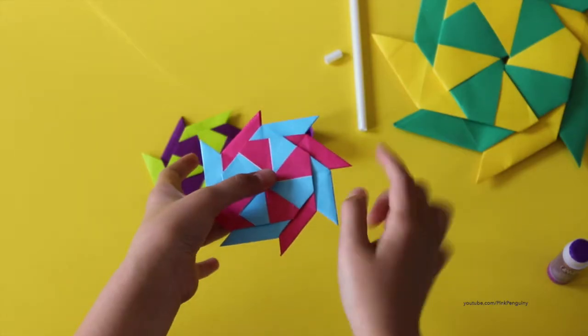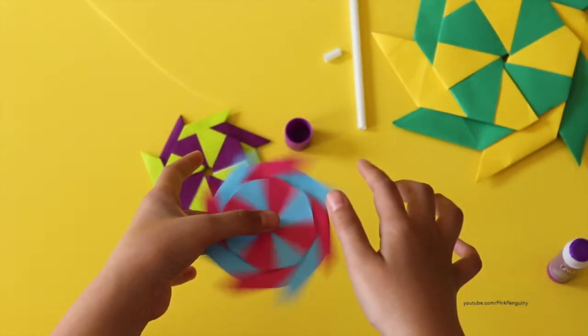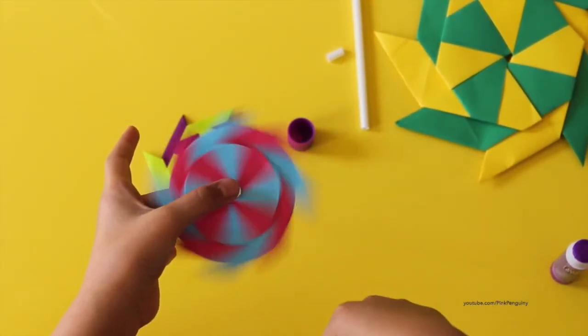So that's how you make a ninja star fidget spinner. Thanks for watching Pink Pigpenny. See you guys for more videos. Bye!